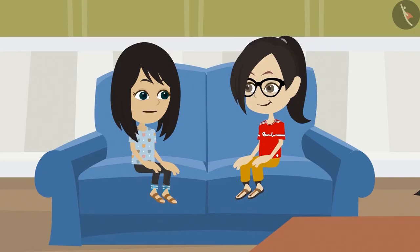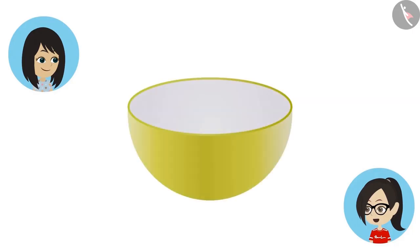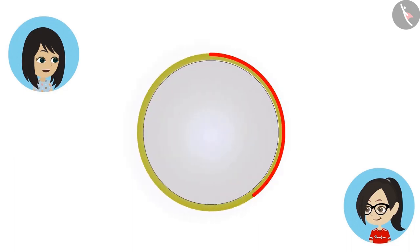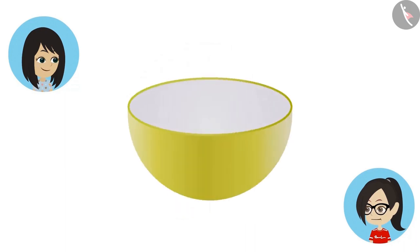Think — if the wheels of the cycle were in the shape of a square, how would we ride it? Look at this bowl; this too has a circular shape. Looking at it from the top, that is clear. But even from the front, it looks like it is made in the shape of a circle.